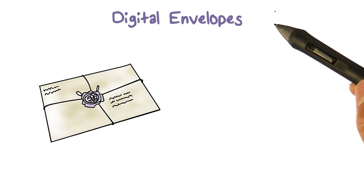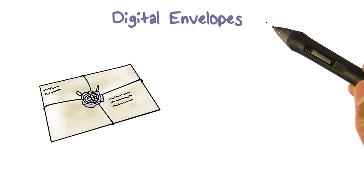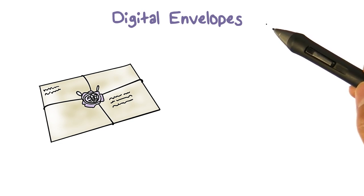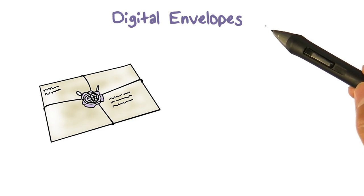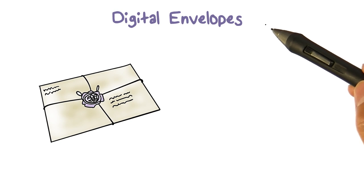Recall we discussed that public key encryption is typically used to establish a symmetric key for encrypting messages, say between Alice and Bob. That is, before Alice and Bob can communicate securely, they will use public key encryption to exchange a shared secret key. Of course, Alice and Bob can first establish this key before Alice can send Bob the first message encrypted using this key.